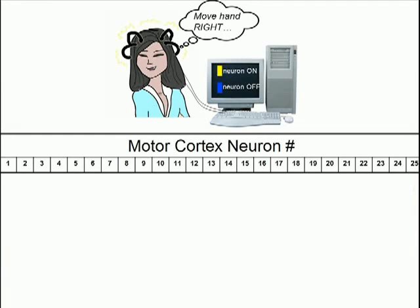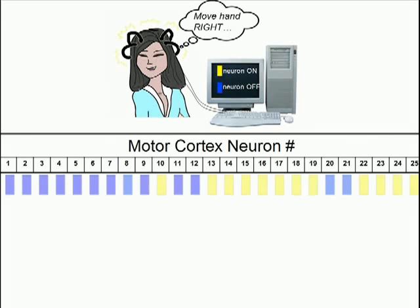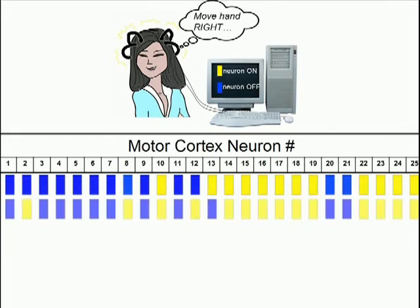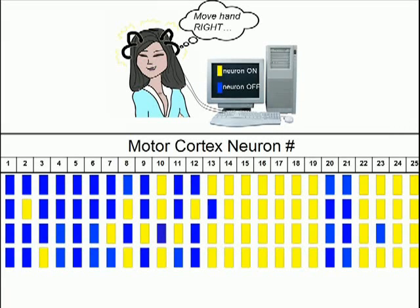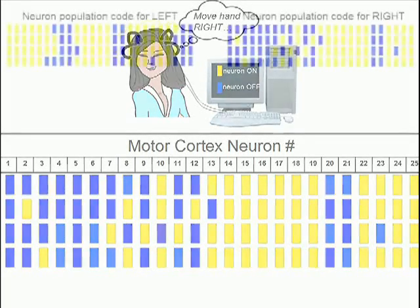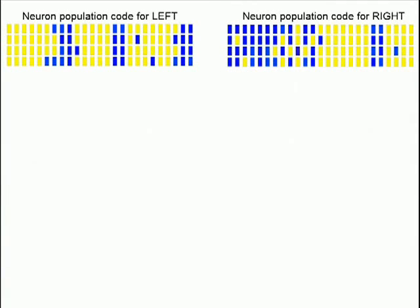And fire — to the right, again and again. And you have a code from her neurons, and it's quite a sight. Now we know her code for move left and move right. The firing activities of her neurons gave us this insight.